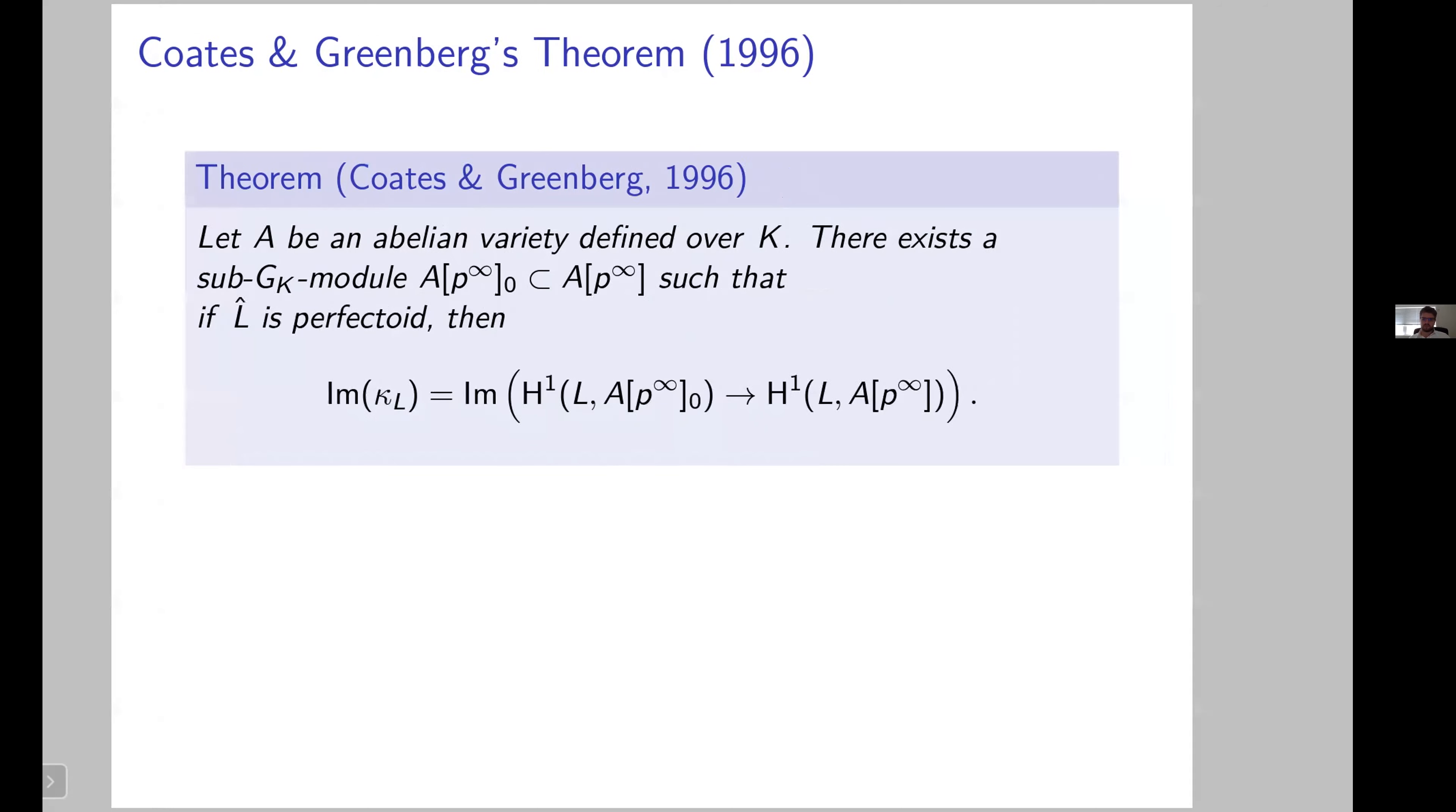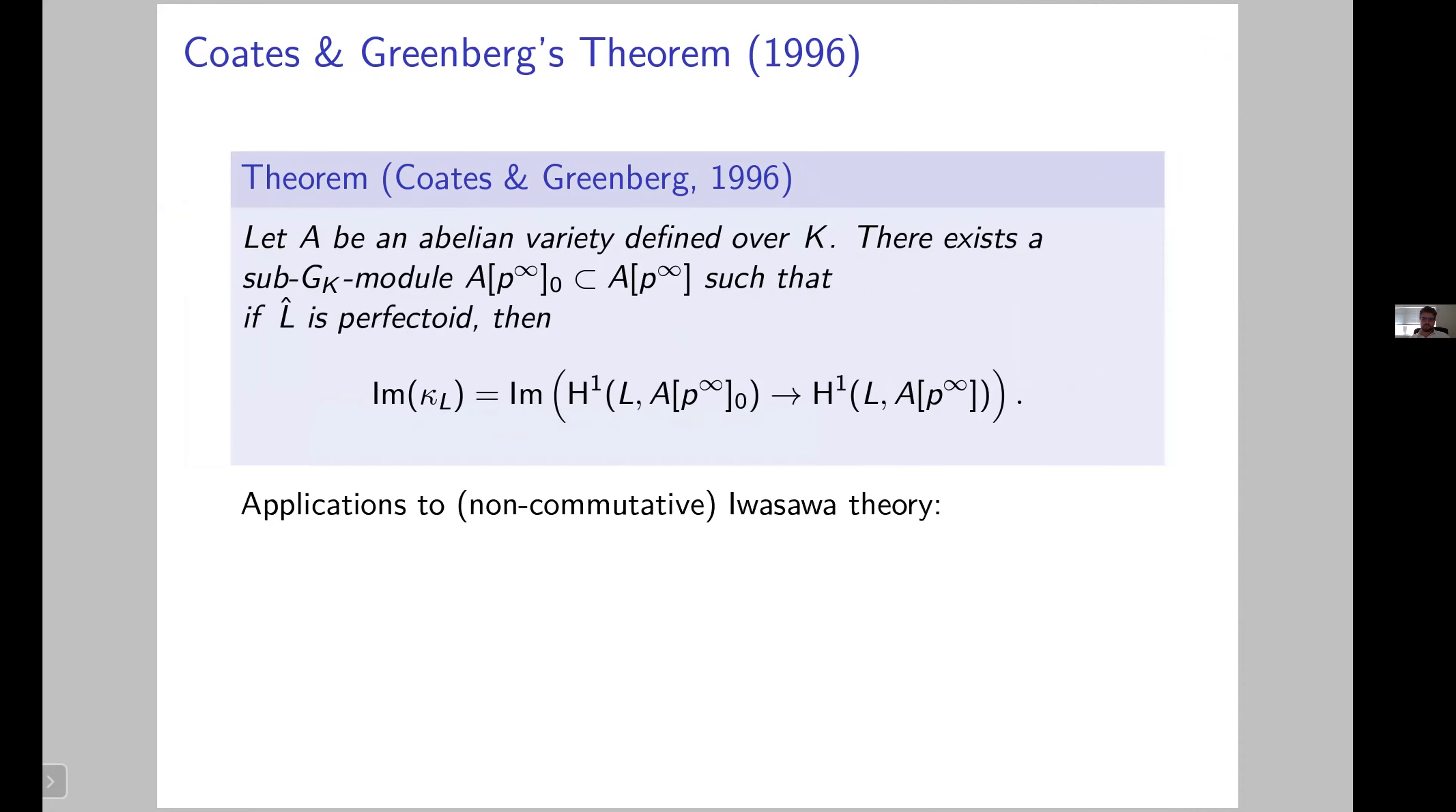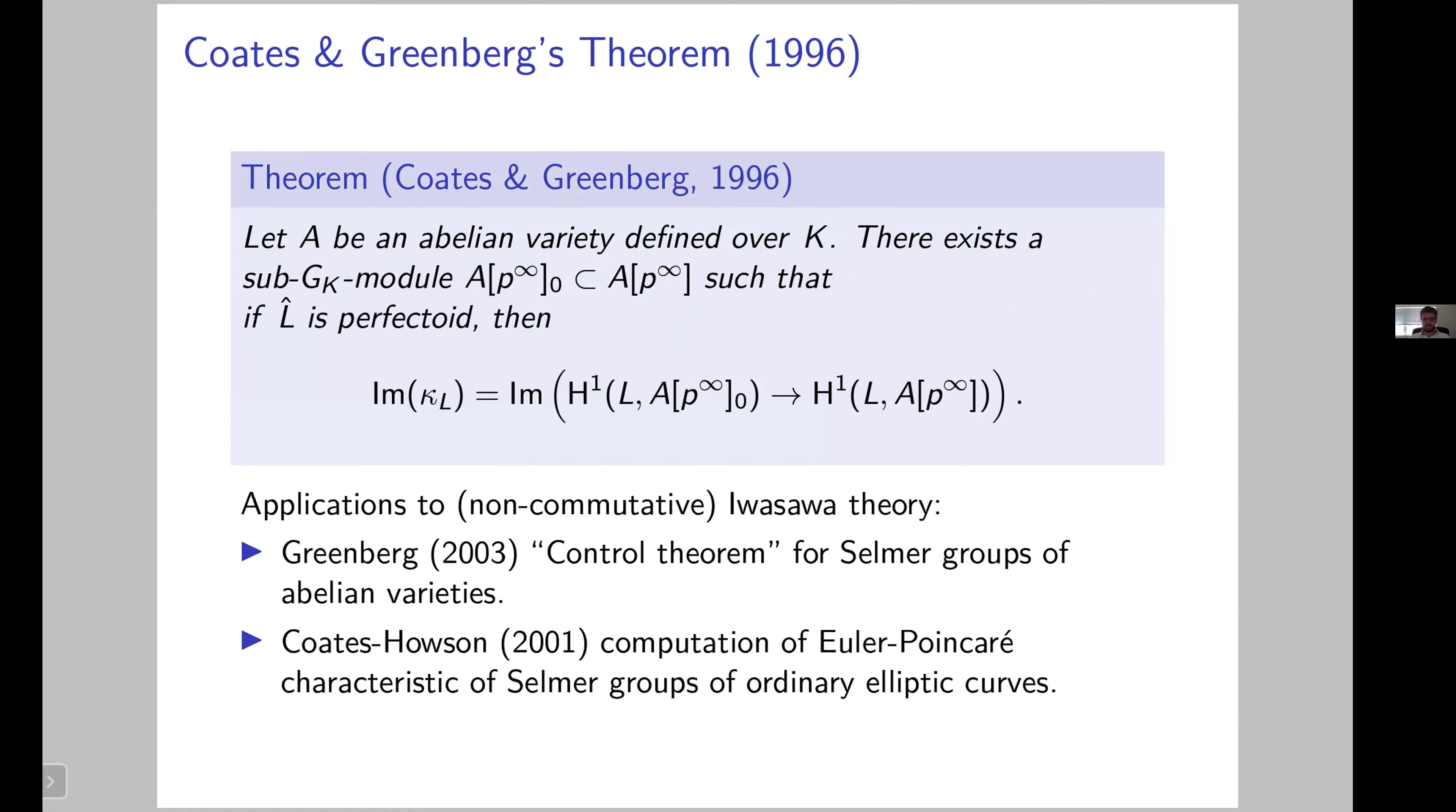The map on the right is very simple, and so you see that this theorem is really nice because it gives you a description of how rational points of the Abelian variety sit inside the Galois cohomology group in terms of a simple map in cohomology. This theorem was actually useful for Iwasawa theory. Coates and Greenberg gave two applications of this later. Greenberg in 2003 gave a vast generalization of Mazur's control theorem for Abelian varieties into very general extensions. That's why it's also interesting for non-commutative Iwasawa theory. And Coates and Susan Howson computed the Euler-Poincaré characteristic of Selmer groups of ordinary elliptic curves thanks to this result.